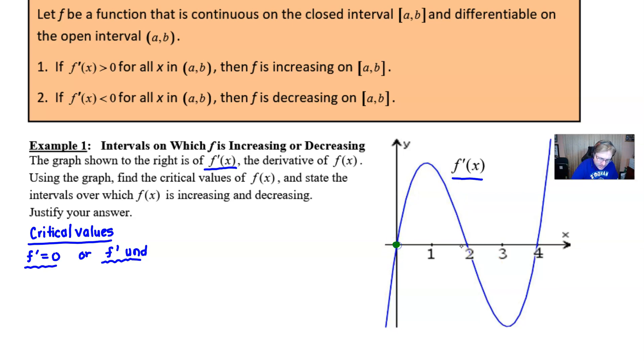Well in this particular case our graph is our derivative. So to determine when this graph is equal to zero, we just merely need to figure out where does this graph cross the x-axis. We see that it does so at three different values.